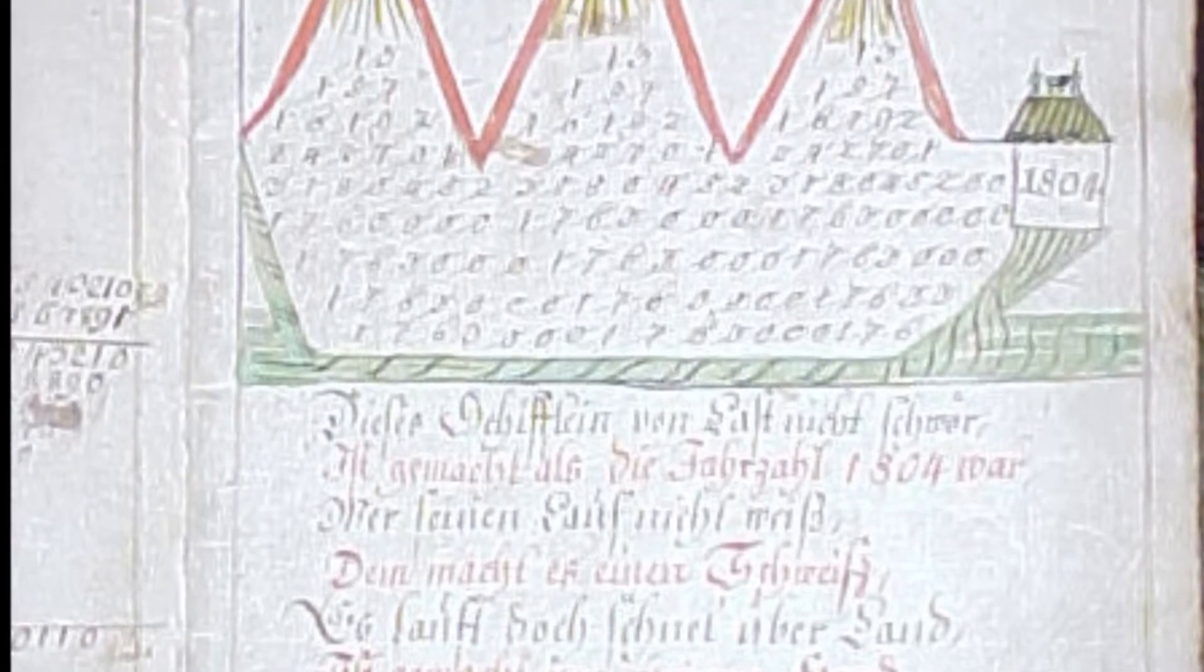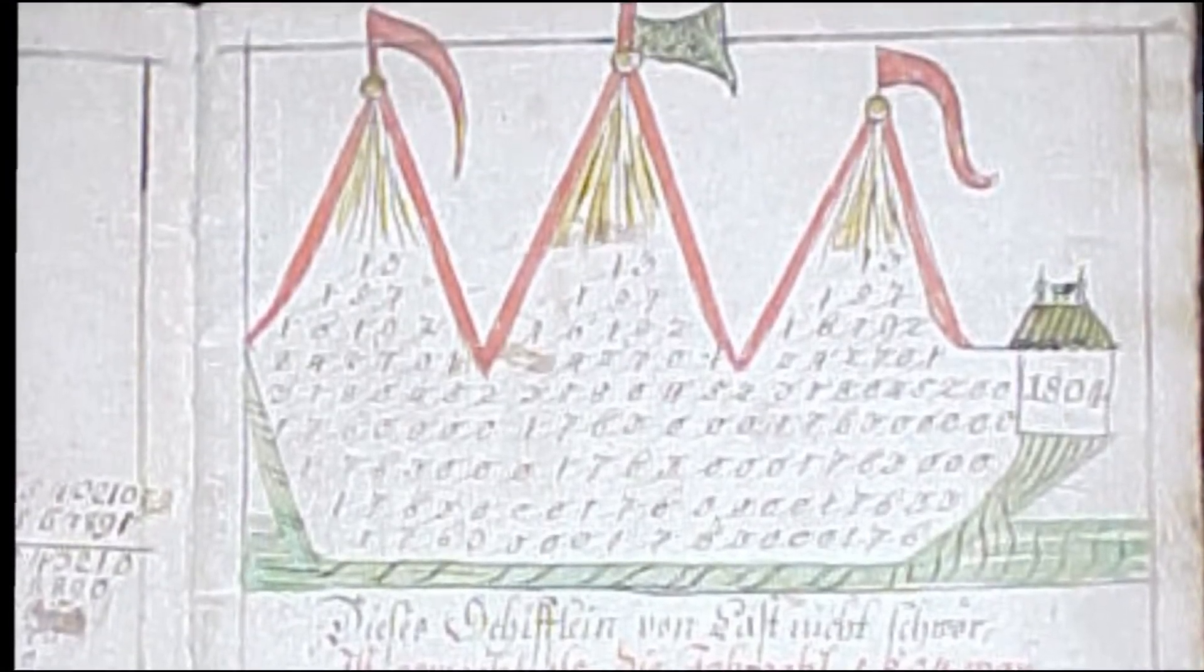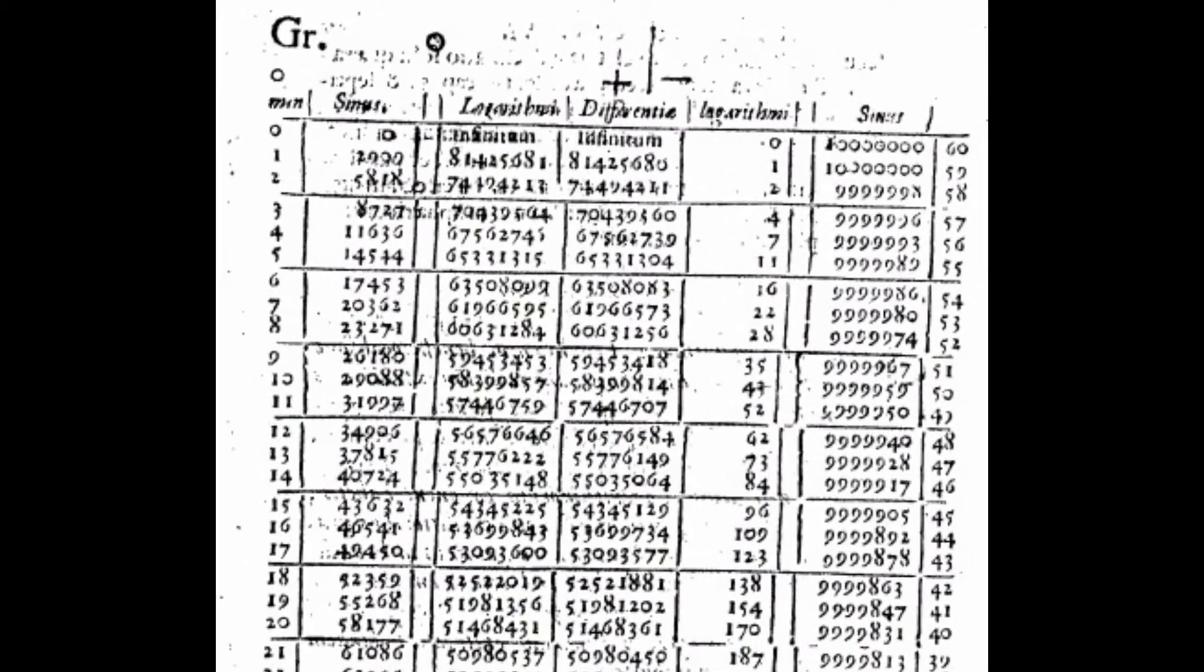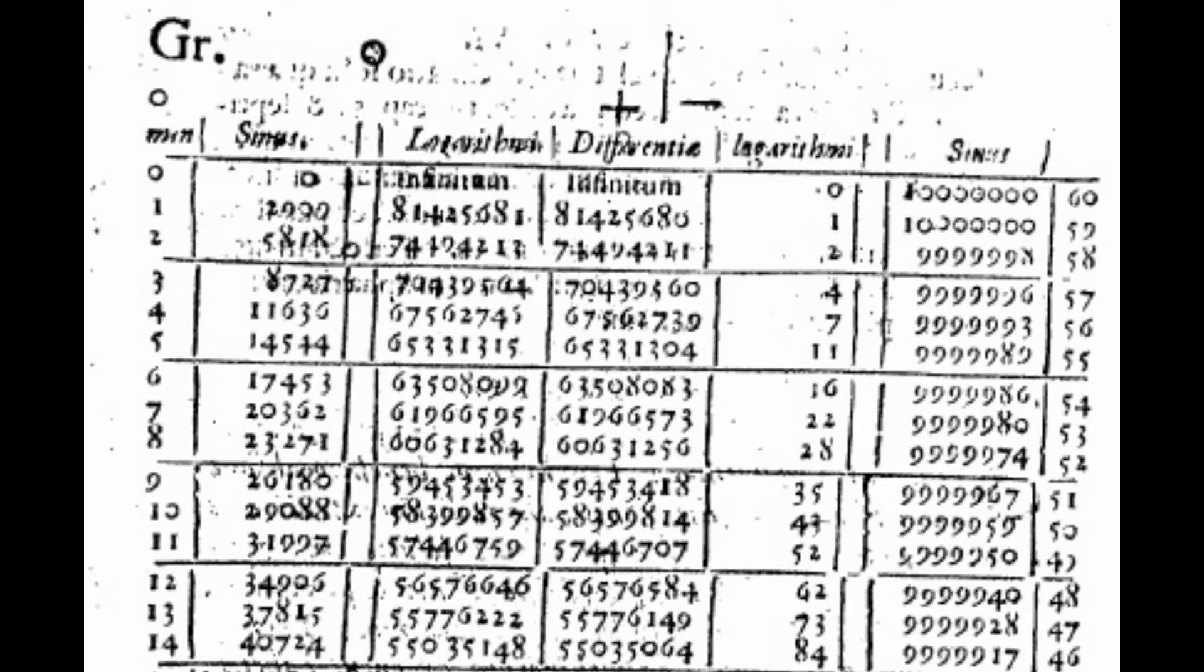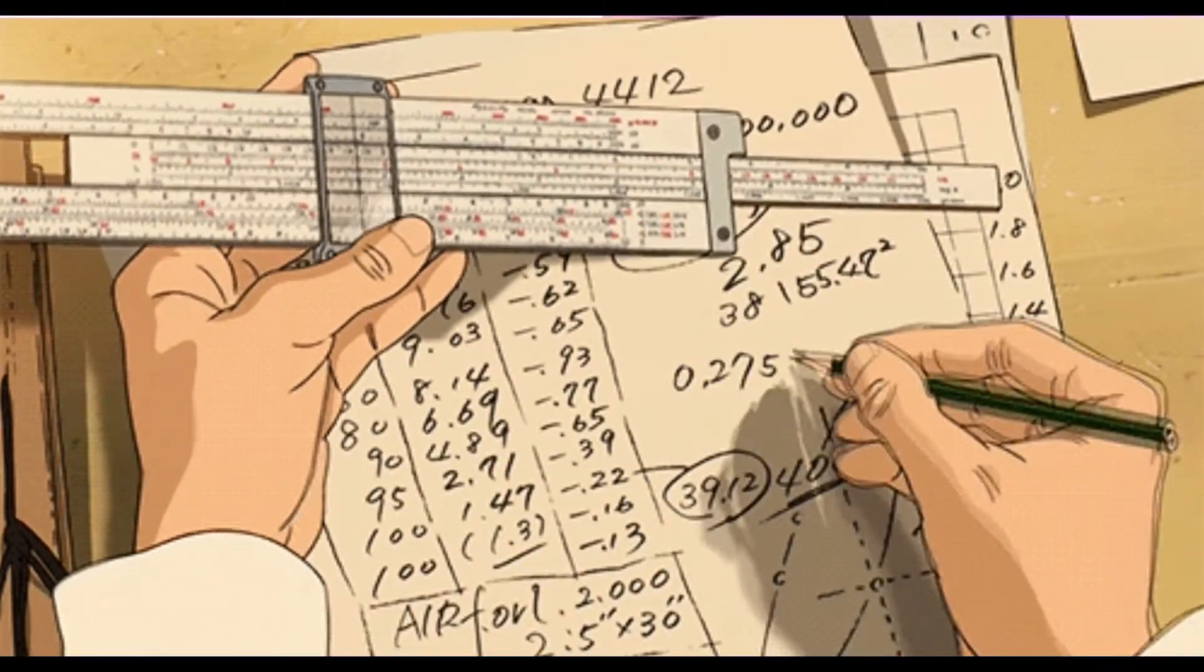Having a surd, an irrational number, as a denominator made things even more challenging than they already were. So it became customary to rationalize the denominators, literally make the denominator a rational rather than an irrational number, in order to make computations easier. Nowadays, with calculators, an irrational denominator doesn't pose as much of a problem as it used to, but rationalizing the denominator is still a useful thing to do in many instances.